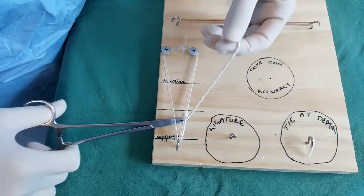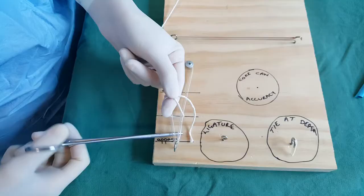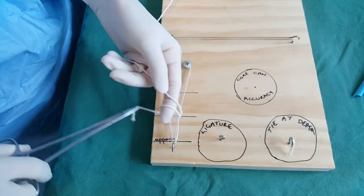Take your needle drivers underneath the structure that you're trying to ligate. Bring the short end around, cross over your finger, and hold both sutures together or both pieces of the suture material together. Go around the back again, grab the short end again, and once again across.